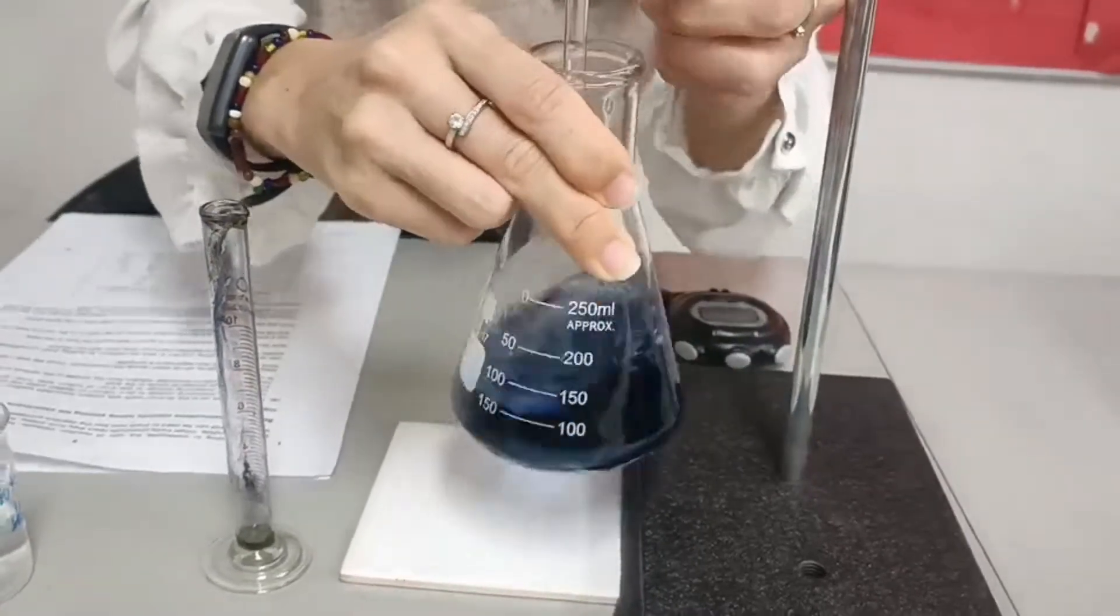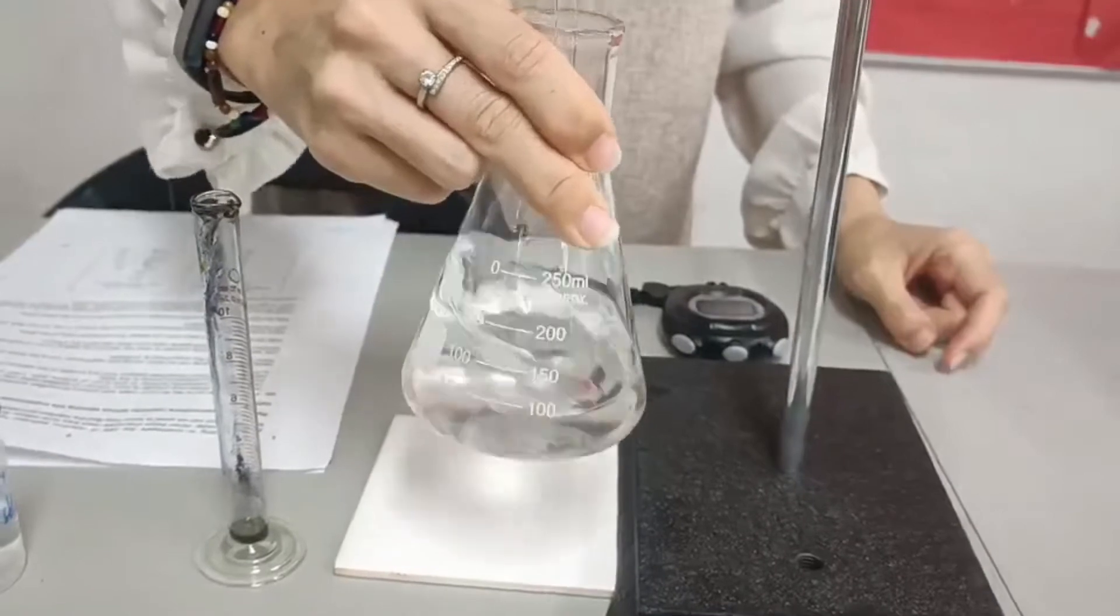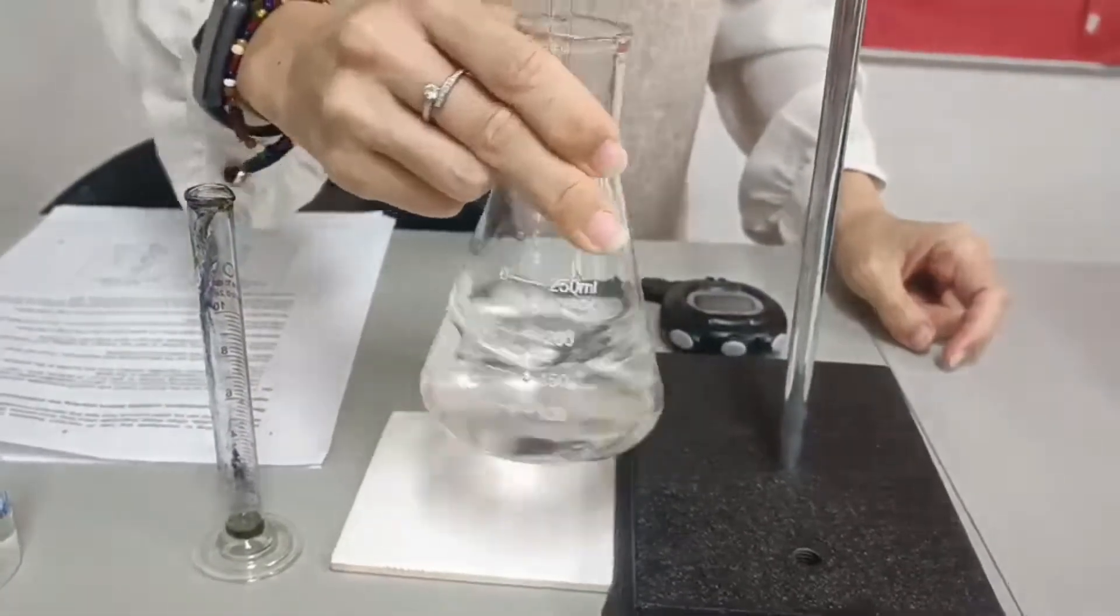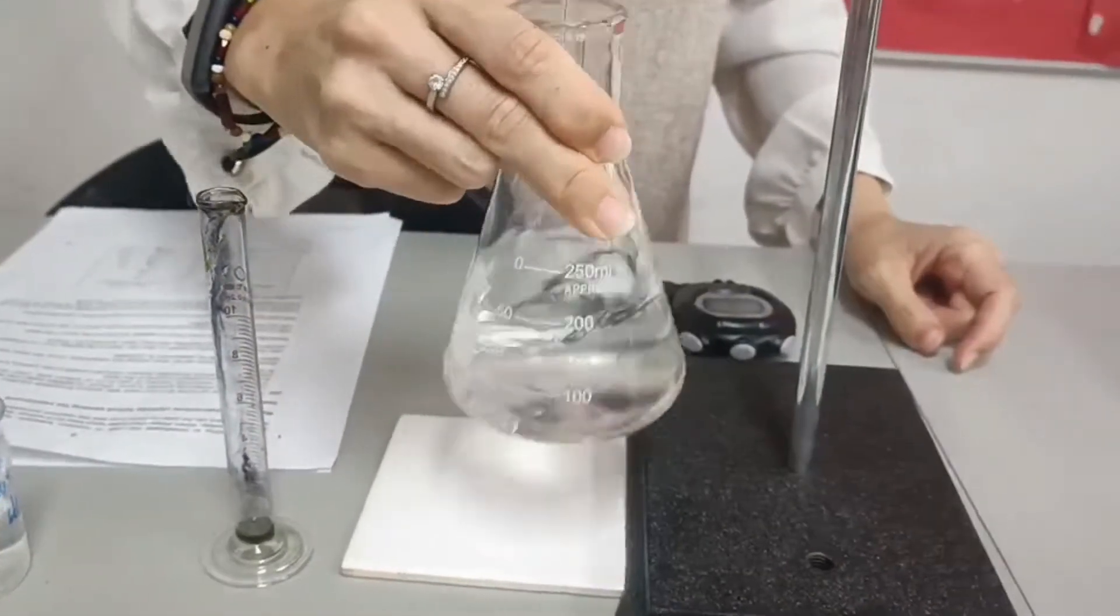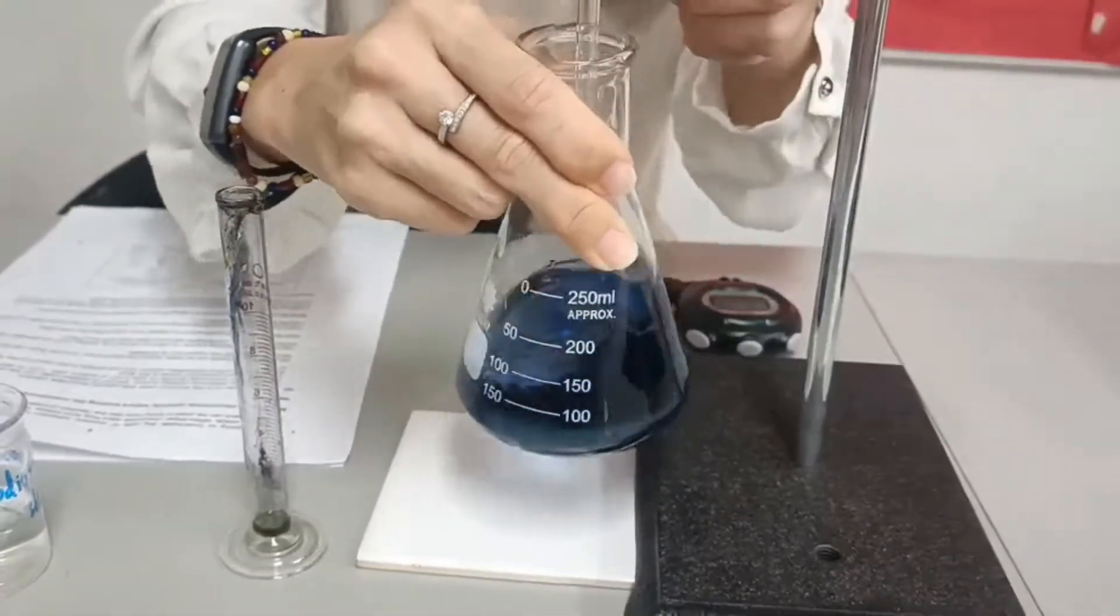And then, add more thiosulfate by 0.5 ml. And note down the time when it turns back to blue. That's your third time.